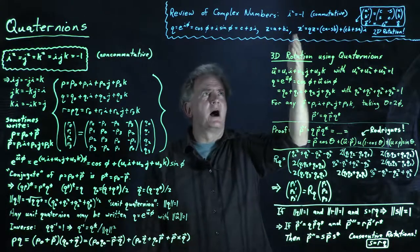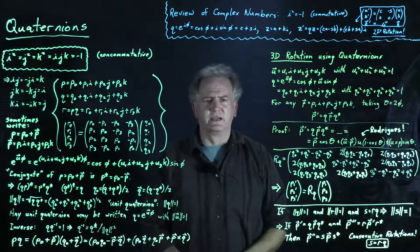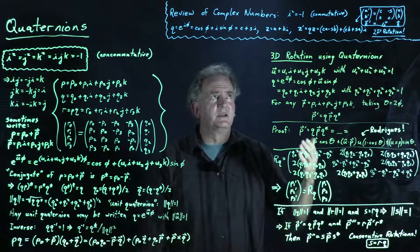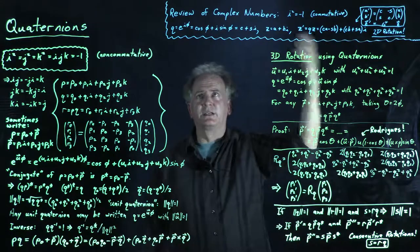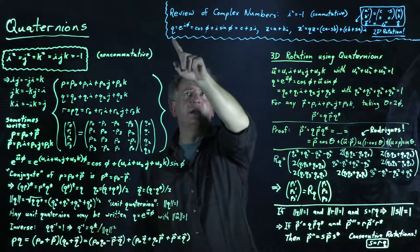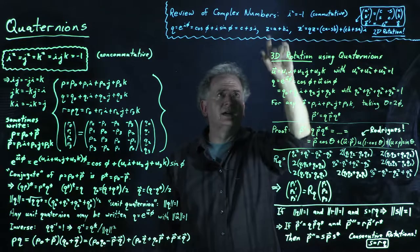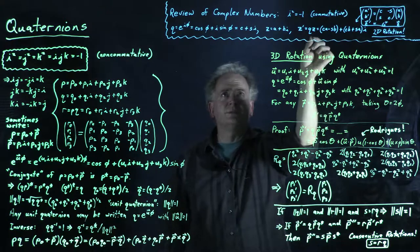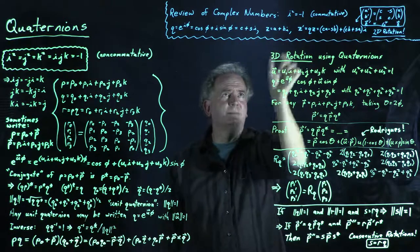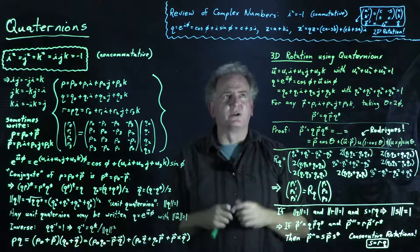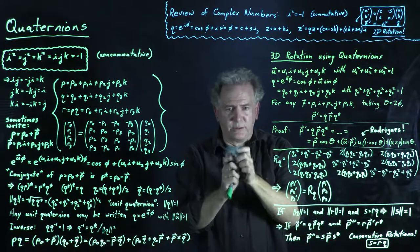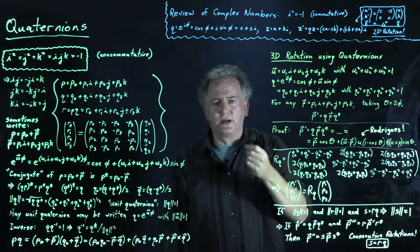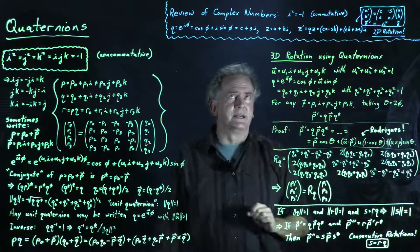Complex numbers were invented by Euler and start from the construction i² = -1. Once you accept that construction and define a commutative algebra based on it, you can multiply two complex numbers: if q = c + si and z = a + bi, then z' = qz. We multiply together c + si and a + bi, treating i as an ordinary algebraic variable, using FOIL, then replacing i² with -1 to get the result.